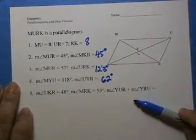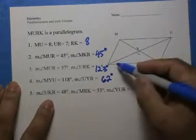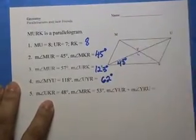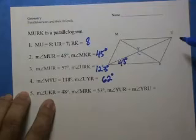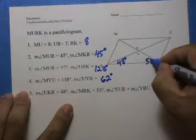Number 5 is the tricky one. Measure of angle UKR is 48. I'm actually going to write this in the diagram. Measure of angle MRK is 53. MRK, that's this one, is 53.